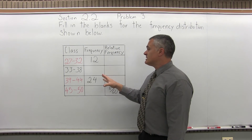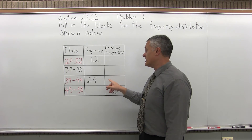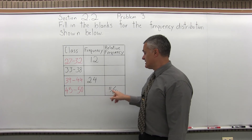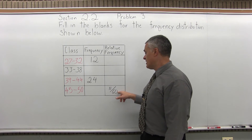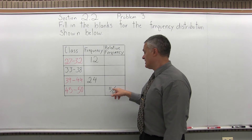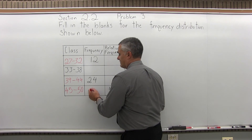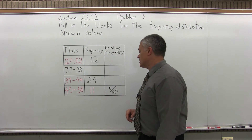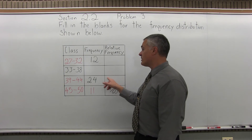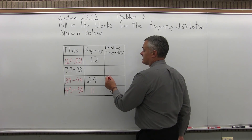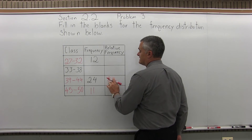Now for the frequencies — I have a couple of missing frequencies and relative frequencies. The total of all frequencies is in the denominator, and the individual frequencies are in the numerator. I can see that my frequencies total up to 60. The frequency for the 45 through 50 class is 11. The next class up has a frequency of 24, so its relative frequency is 24 over 60.